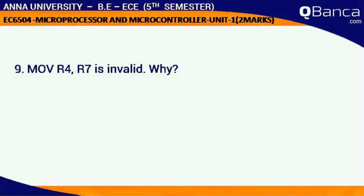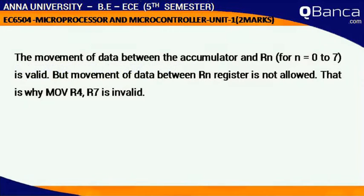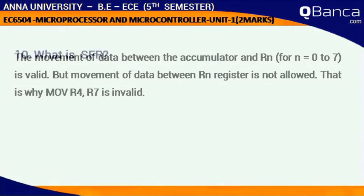MOV R4, R7 is invalid. Why? The movement of data between the accumulator and Rn (for n equal to 0 to 7) is valid, but movement of data between Rn registers is not allowed. That is why MOV R4, R7 is invalid.